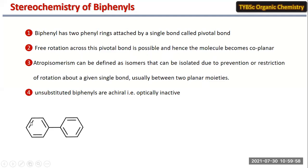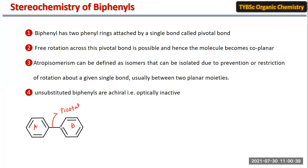You can see here this particular ring is ring A and this is ring B, and this particular bond is known as the pivotal bond. Due to this pivotal bond, rotation between these two rings is possible — by keeping one ring fixed, the other ring can be rotated.